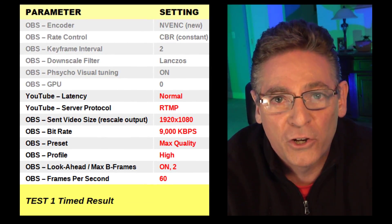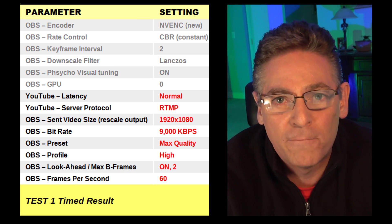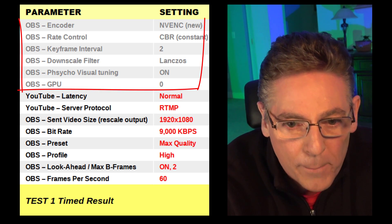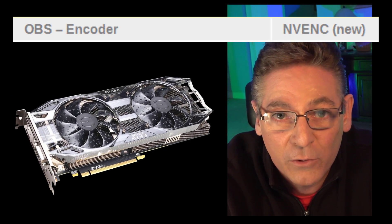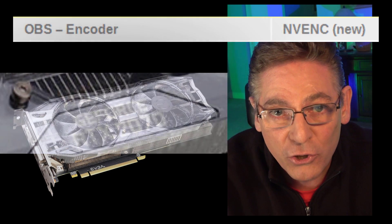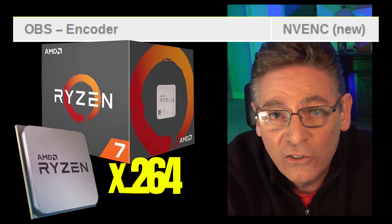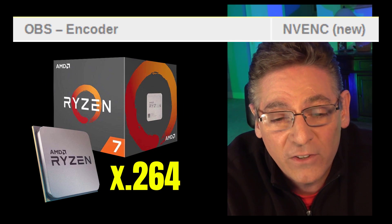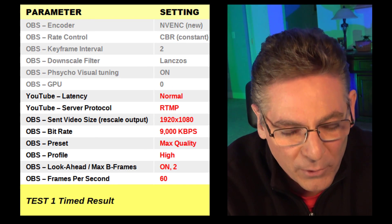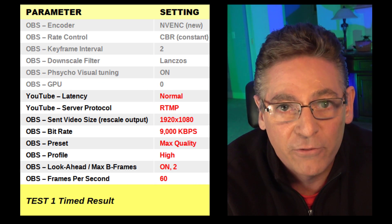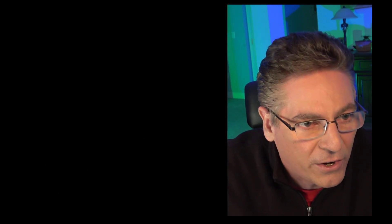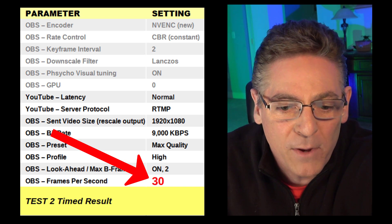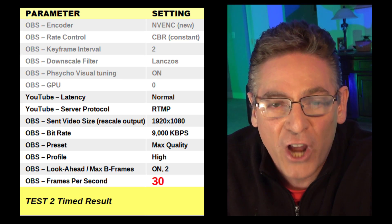This graphic represents what I'll show you before each test — a report of what I'm modifying. The text in gray represents parameters I am not modifying; the first is the encoder. I'm sticking with NVENC because I have a GeForce 20 series card. If you have a 10 or 20 series card you should be using NVENC. The black text represents parameters we will modify from test to test, and the red text shows what has been modified. Each settings card shows the change for the upcoming test.